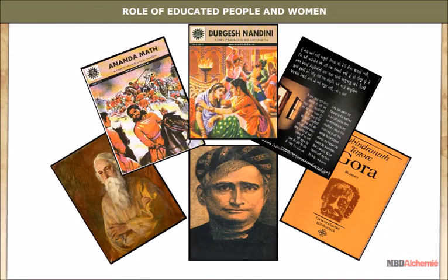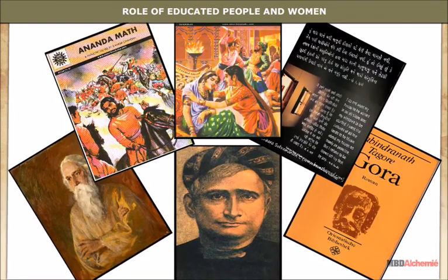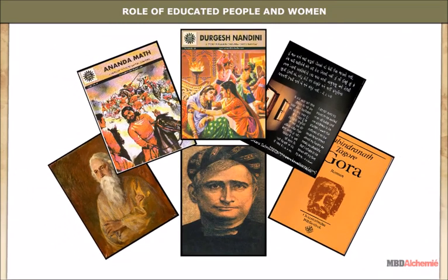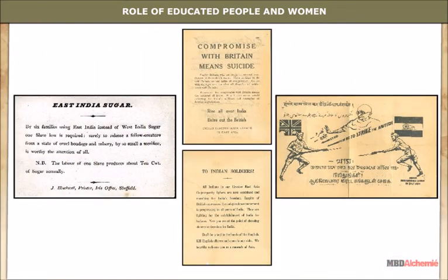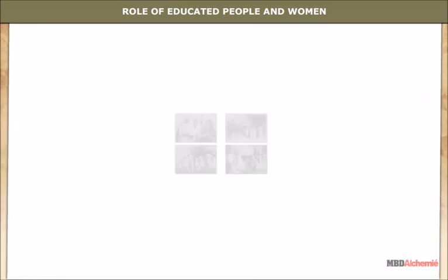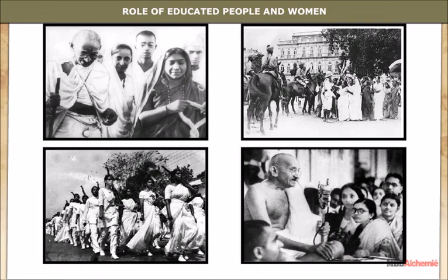Role of Educated People and Women: Writers, poets, journalists, teachers and students carried on considerable educational work during the movement. Patriotic literature, anti-British pamphlets and posters were published in English and local languages. To muzzle the press, the British decided to revive the powers of the Press Act of 1910. A remarkable feature of the civil disobedience movement was the widespread participation of women. They participated in protest marches, manufactured salt, and picketed shops selling liquor and foreign clothes.